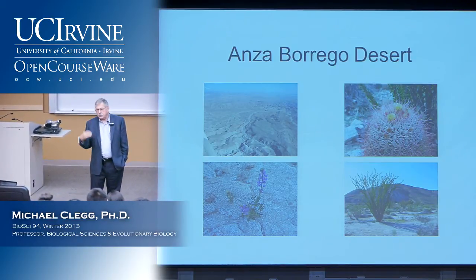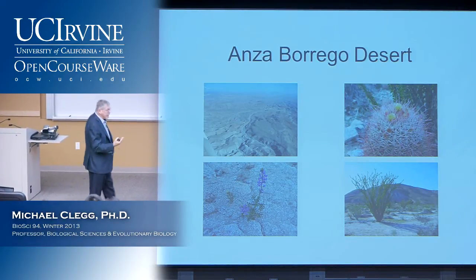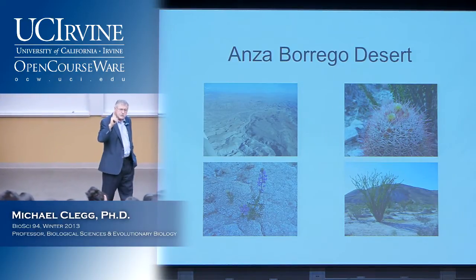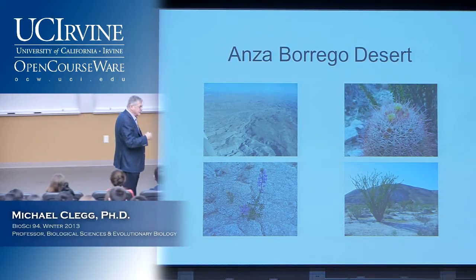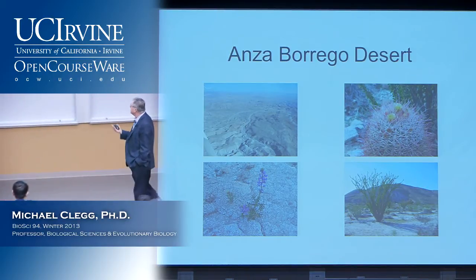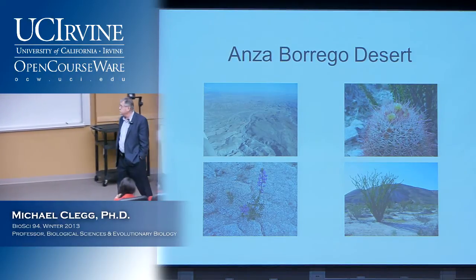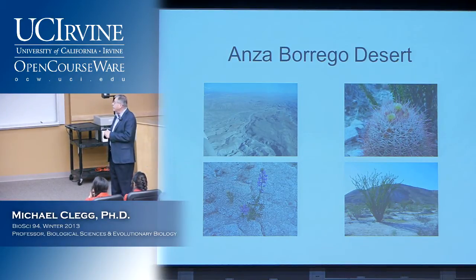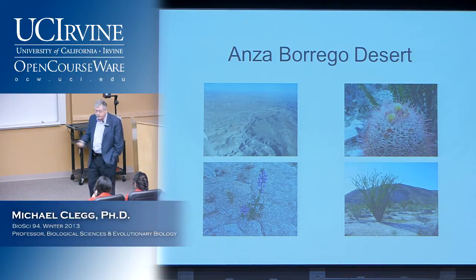The six lineages include cycads, ginkgos — there's only one living species of ginkgo, although they were once common — other conifers including redwoods and yews, pines, gnetophytes, and finally the flowering plants, the angiosperms. Then we began to talk about how plants adapt to dry conditions, the major innovations in land plant evolution.